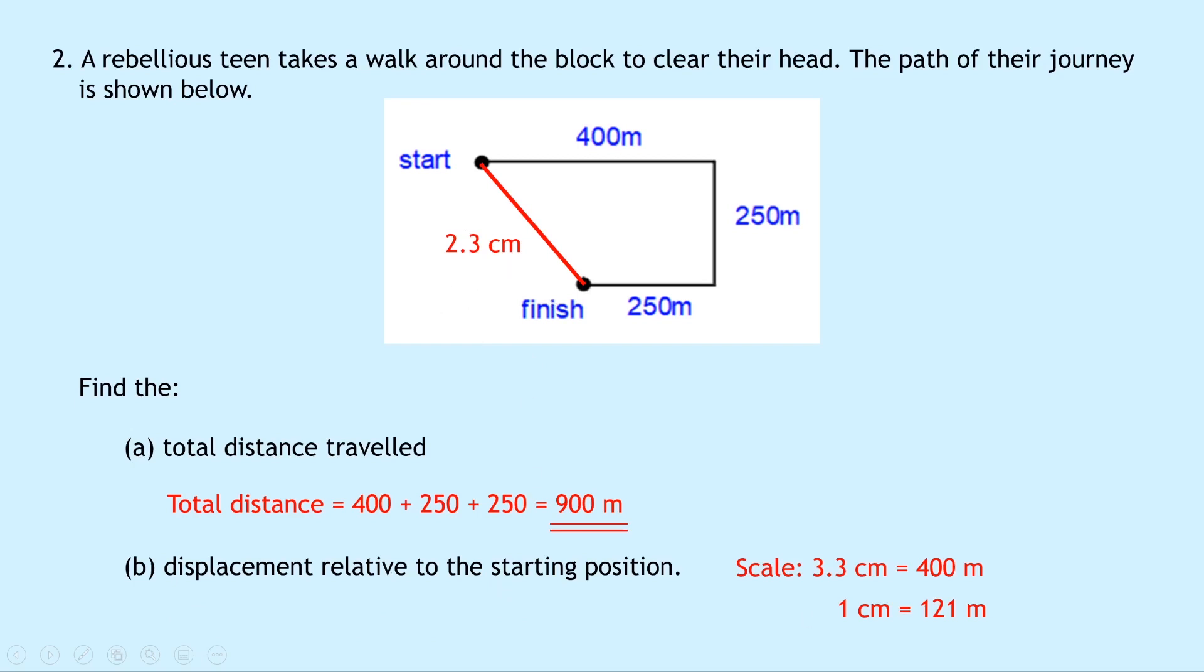So we can then convert back from centimetres into metres using our scale here. 1 centimetre equals 121 metres. So 2.3 centimetres is equal to 2.3 times 121, which gives us an answer of 278 metres.